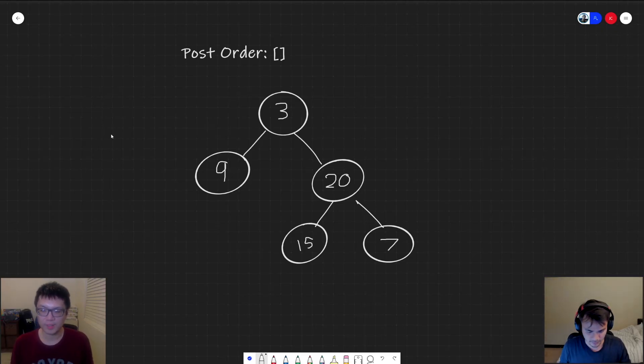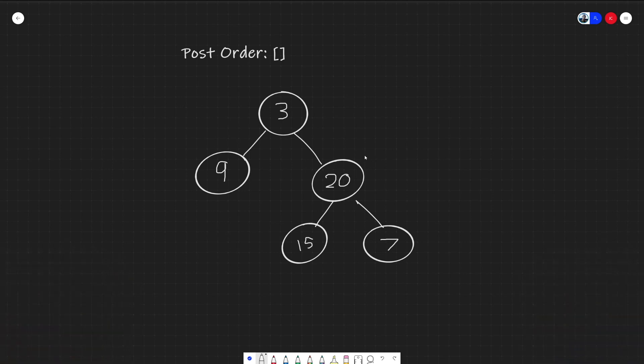So on the blackboard, we have the tree that we saw in the example problem. We have a tree node, a parent tree node of three, with the child nodes nine, twenty, and then fifteen, and seven. As you can see, this tree node has a height of three, because three, twenty, and seven, or fifteen really, gives us a total height of three.